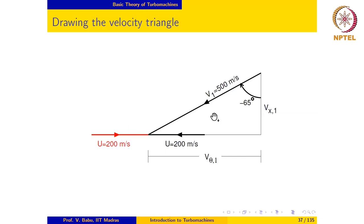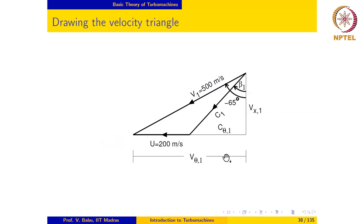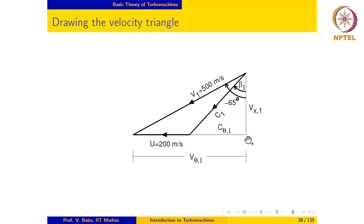We can now proceed to complete the inlet velocity triangle: c1 plus u equals v1. It can also be seen that the inlet blade angle beta1 is going to be a negative number because c1 is located in the clockwise direction from the reference direction, and this segment represents c_theta1.